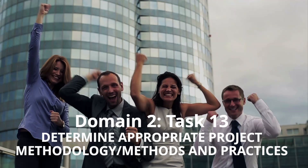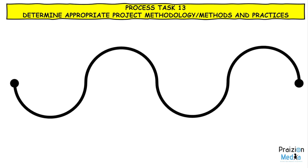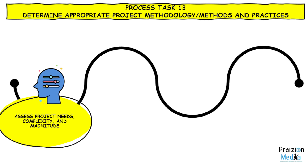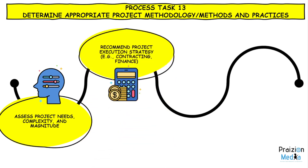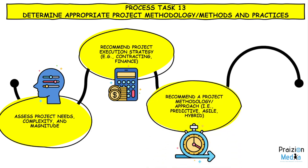Day 27 we're going into Domain 2, Task 13, called Determine Appropriate Project Methodology, Methods and Practices. The very first enabler simply states: Assess Project Needs, Complexity and Magnitude. The second enabler is Recommend Project Execution Strategy — that is Contracting, Finance and so on.